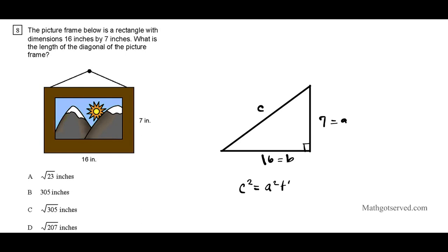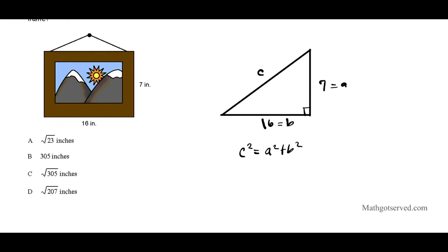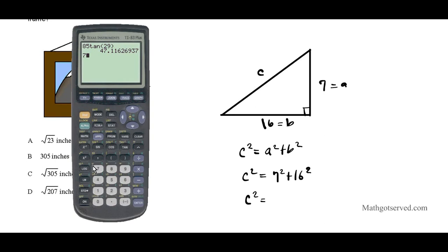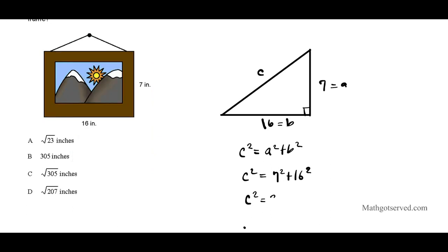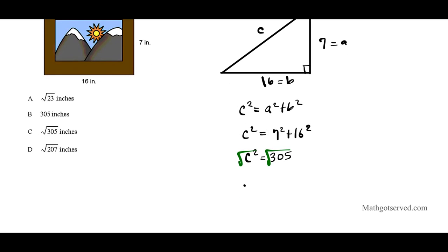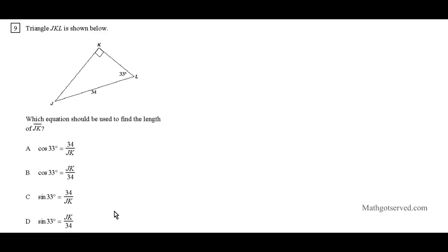Question 9: triangle JKL is shown and we need to find which equation should be used to find the length of JK. Using right triangle trigonometry with the 33-degree angle, JK is the opposite side and 34 is the hypotenuse. The sine ratio gives sine 33 equals JK over 34, so the setup is sine 33 equals x over 34. The answer is option B.